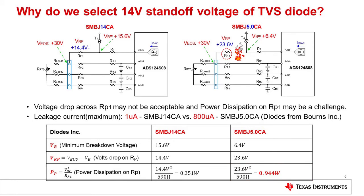As a rule of thumb, the power rating for resistors is usually selected to be double the maximum continuous power dissipation expected for the resistor. So for the 5 volt TVS diode, RP1 would need to be a 2 watt resistor. This resistor would be large and expensive. The 14 volt TVS, on the other hand, would have a much more reasonable resistor power rating. Keep in mind that this protection scheme relies upon the internal ESD diode acting as a second layer of protection. Aside from the power benefit, using a TVS with a higher standoff voltage has a performance benefit.